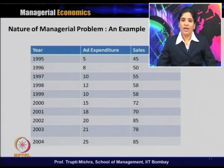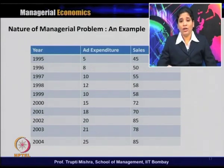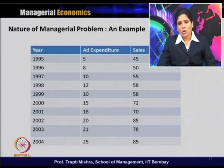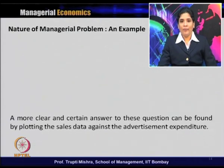If you look at the table, the first column gives a timeline in terms of years, the second is advertising expenditure, and the third is sales. In different years, advertising expenditure is going on increasing — from 5 to 8, 8 to 10, 10 to 12, and so on. Sales are also increasing, but the increase in sales is not in a consistent manner — sometimes increasing more, sometimes less, sometimes high, sometimes constant. Between 1998 and 1999, sales remained constant even as expenditure changed.